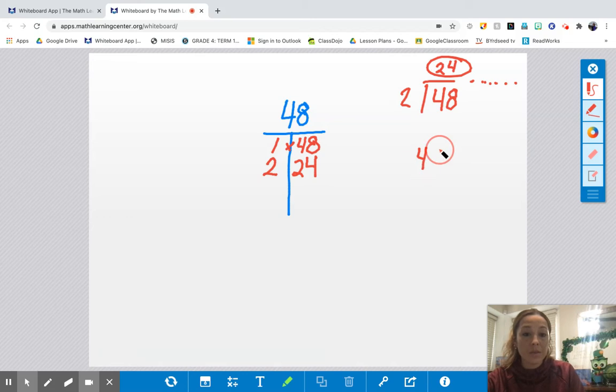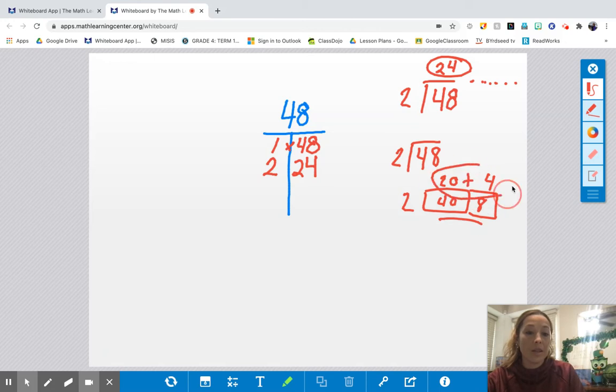Or you can, you know, sit and do some division and say, you know what, 2 times 20 makes 40. And 2 times 4 makes 8. There's my 48. And so 24 works.